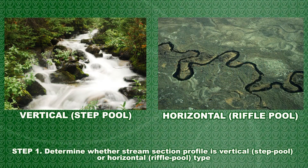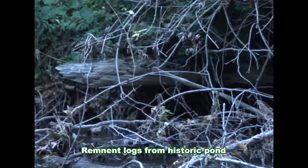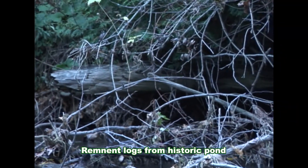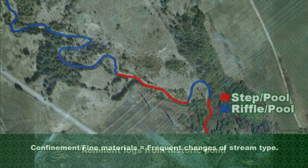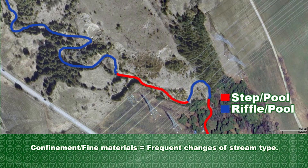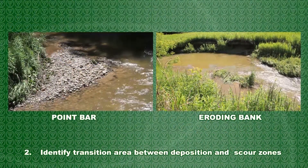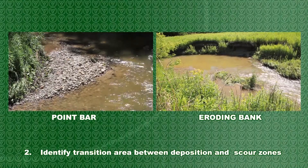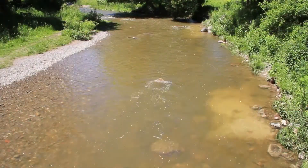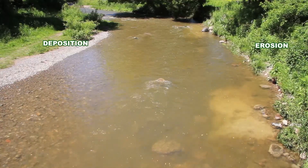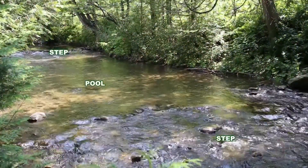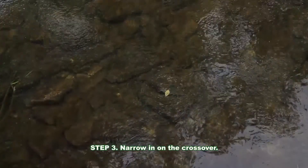Determine whether the stream section profile is flowing as a step pool or a riffle pool type. In developed landscapes, they are often precedent areas that cut through abandoned ponds where slope is at least locally increased and the channel is temporarily confined by the old pond deposits. Identify the transition area. In a riffle pool system, this will be the area on the banks where it switches from being a deposition zone to an erosion zone. In a step pool system, this will be the step.